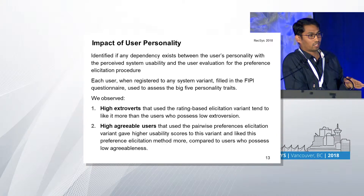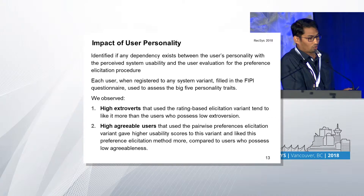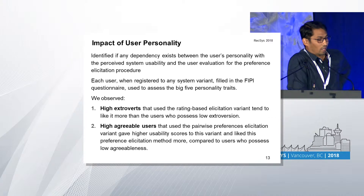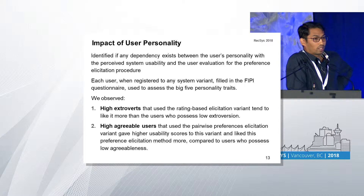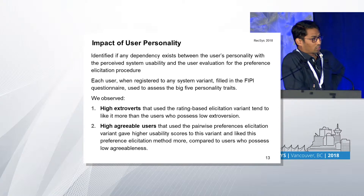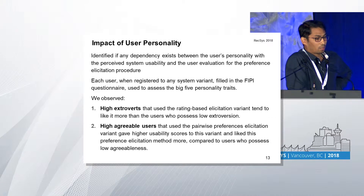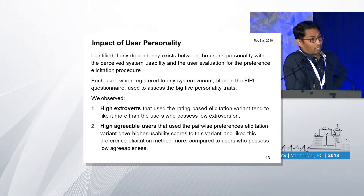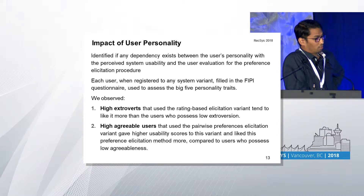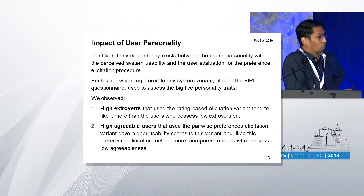We observed that high extroverts tend to use rating-based systems more than users who possess low extroversion. And high agreeable users use pairwise preference elicitation, give higher scores, and like to use preference elicitation more compared to users with low agreeableness.